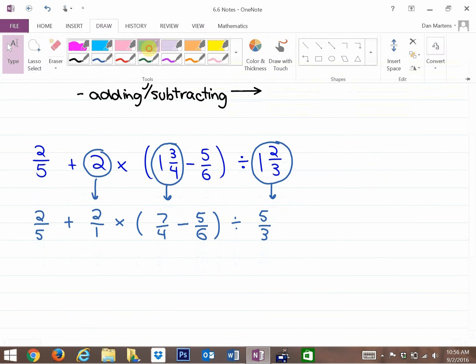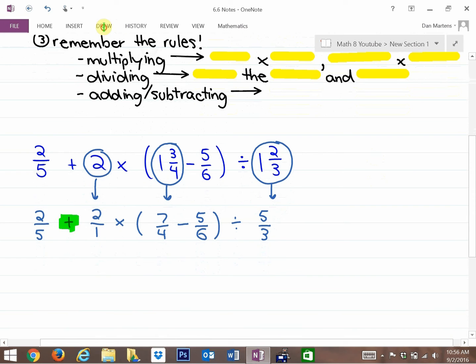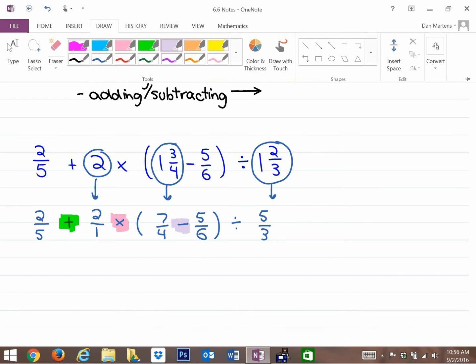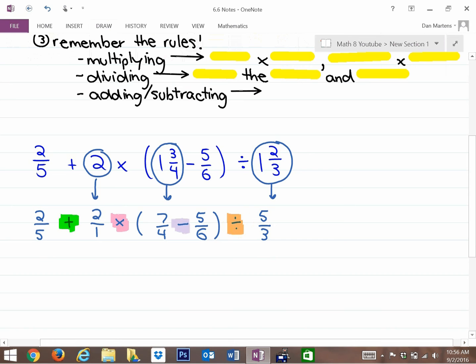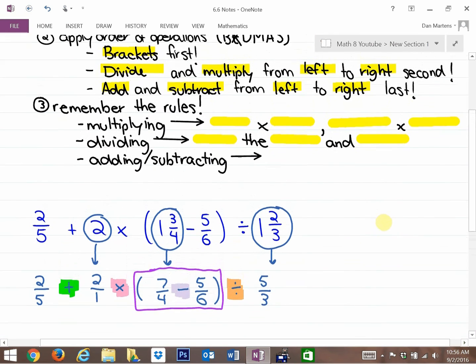Let me identify the operations in this line. We have adding, multiplication, subtracting, and dividing. With BEDMAS, the first thing is any operations in brackets. The thing to do is identify the operation you'd like to simplify first, put it in a box, and remember your rules. That bracket operation, the subtracting, is going to happen first.